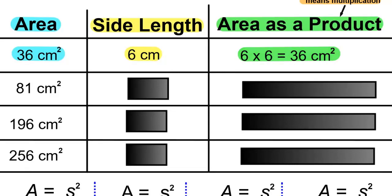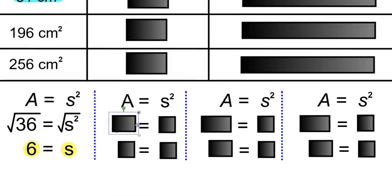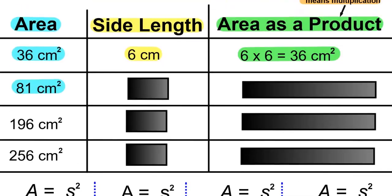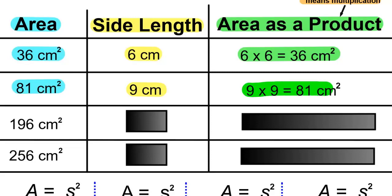In the next example, the area is 81 centimeters squared. Area equals side squared. 81 equals side squared. Take the square root of side squared, therefore taking the square root of 81. Squared and square root cancel, giving us S, and the square root of 81 is 9. So the side equals 9 centimeters. And the area as a product is 9 times 9 equals 81 centimeters squared.